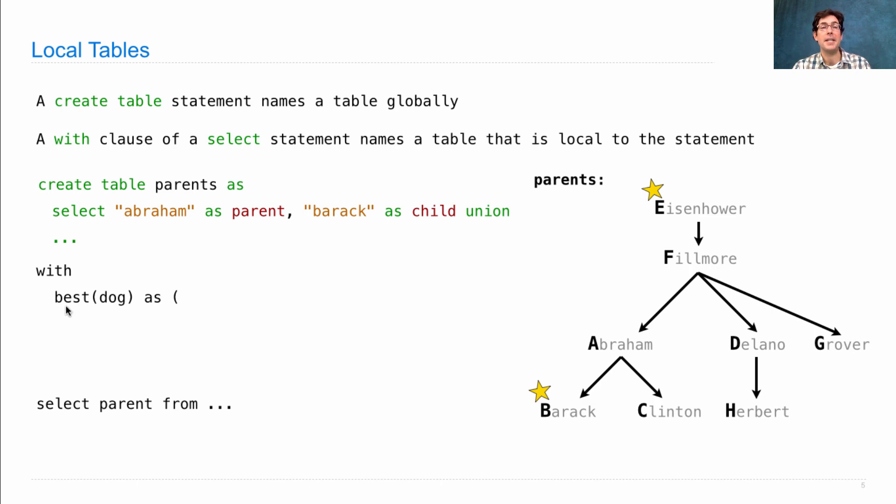Best is the name of a table. It will be only a local name. Dog is actually a column name. So the way you declare this is to say, what's the table name? And then in parentheses separated by commas, what are all the names of the columns of the table that I'm creating?